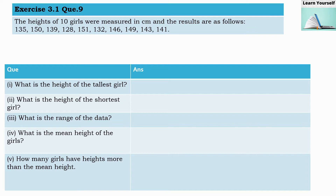To find the tallest girl, we look for the highest observation. We concentrate on the tens position since all data starts from 100. Here we can see 3, 5, 5 — marking 5 at the tens position. These two observations have 5 at the tens position, and within those two, 151 is the highest. So the tallest girl has a height of 151 centimeters.